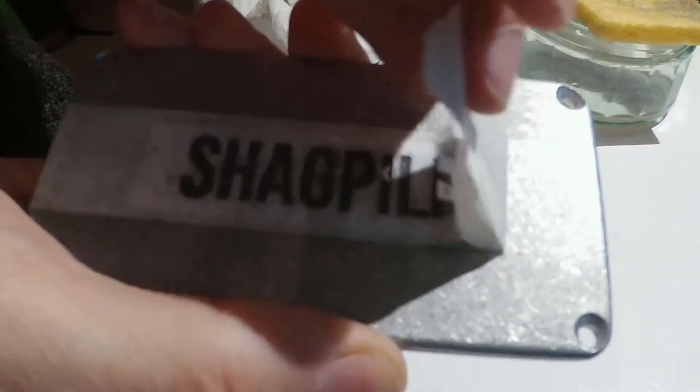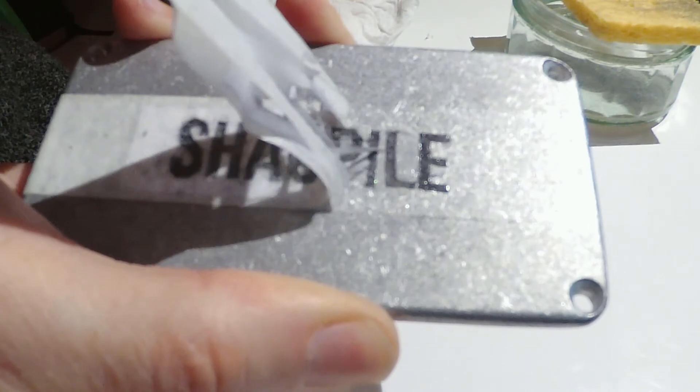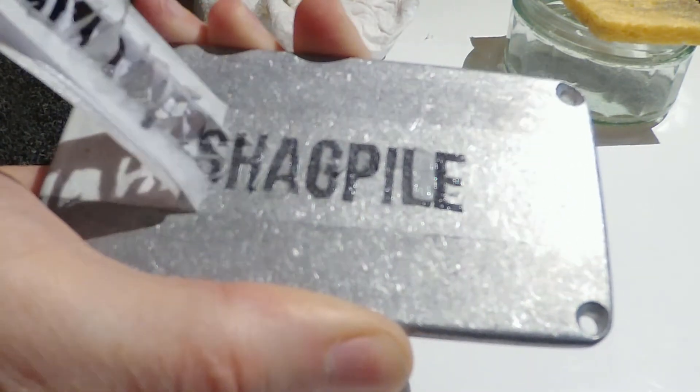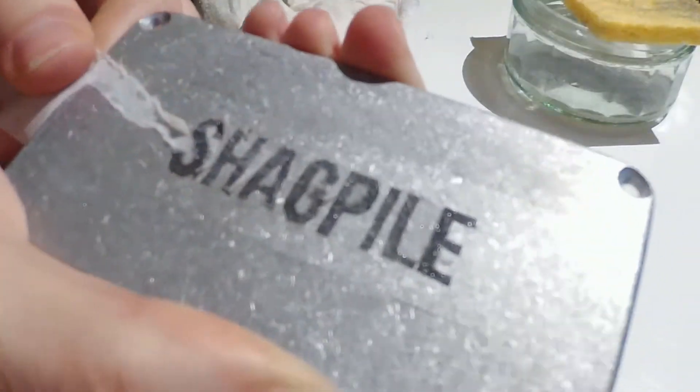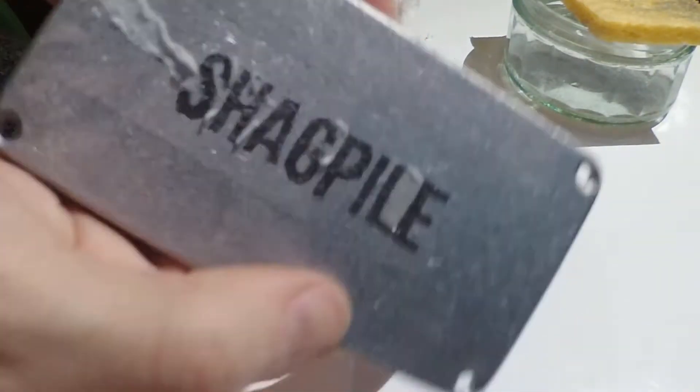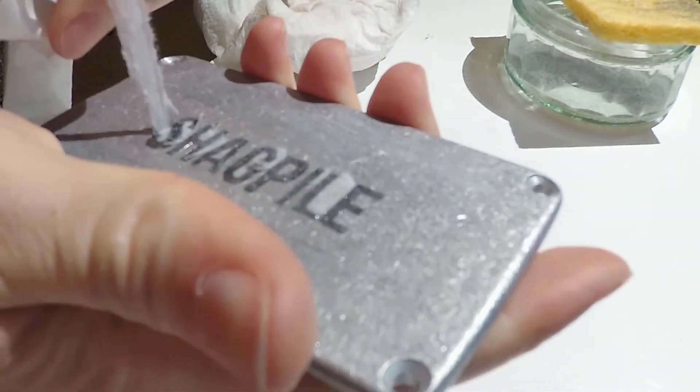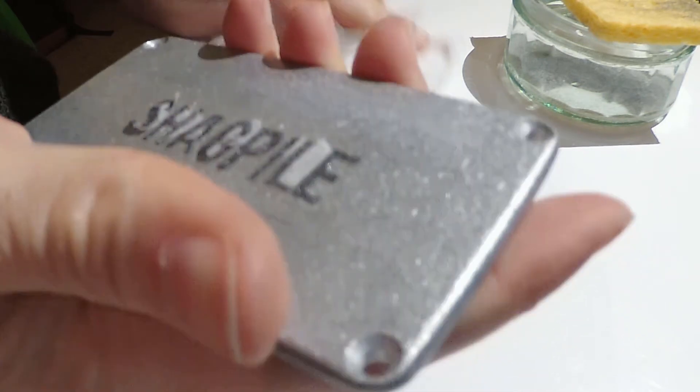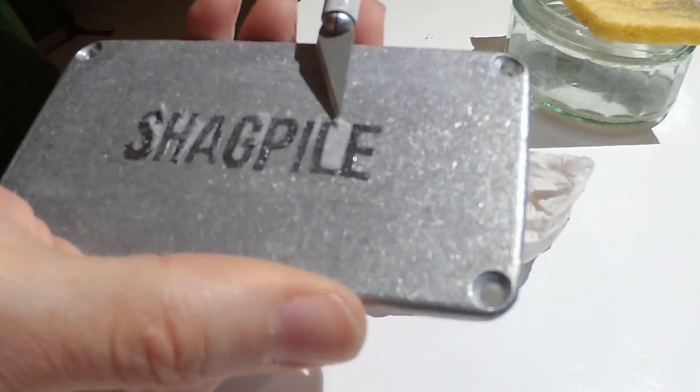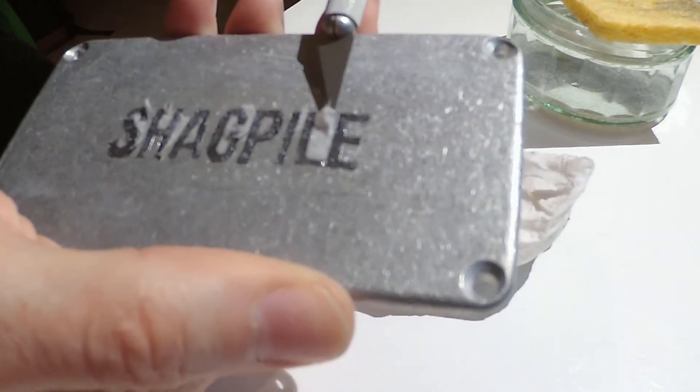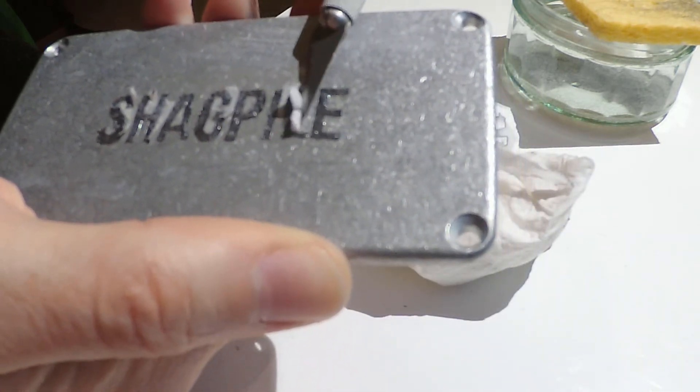It should come away nice and easily, but you might get some little bits stuck to the design, but that's okay. So you can scrub them with a bit of wet and dry paper if you want to get all the little bits away. And what I do is just take the craft knife and peel away some of the larger parts like that.